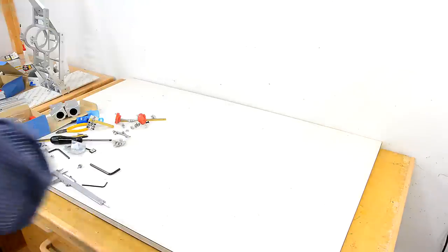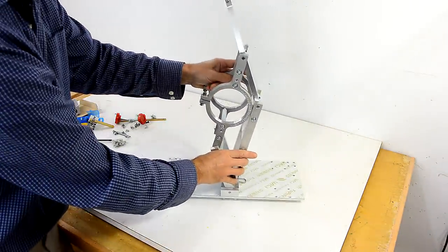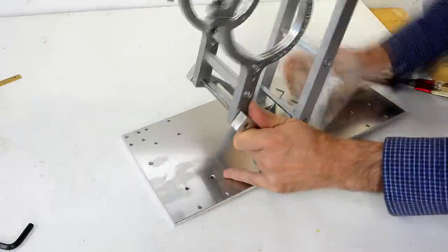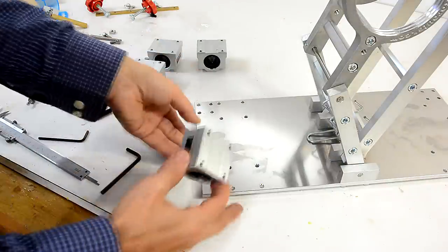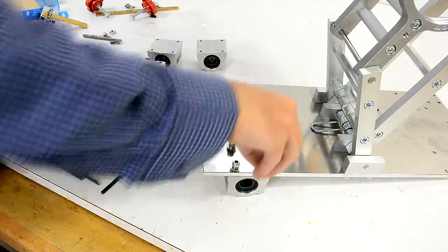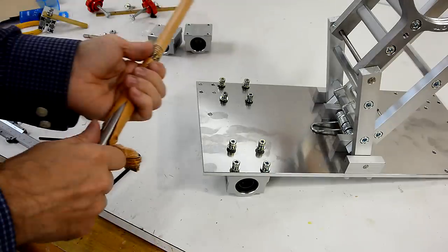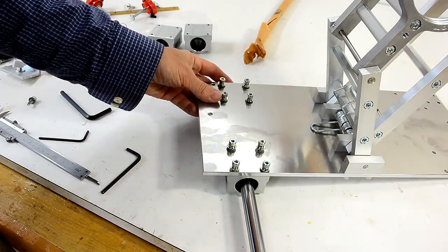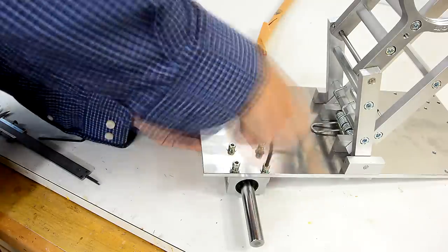Now I'll put the base aside and work on the pantograph mechanism. Now we have to attach the linear bearings to the bottom of the pantograph base. It's a good idea to insert the rod in the bearings before tightening them down, just to make sure that they're actually aligned with each other.